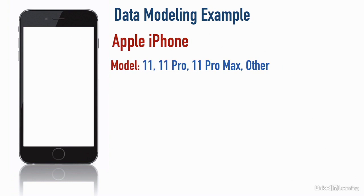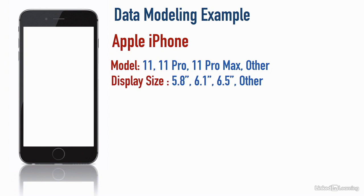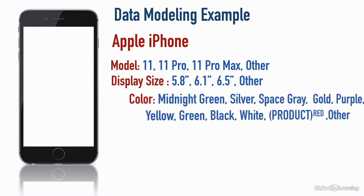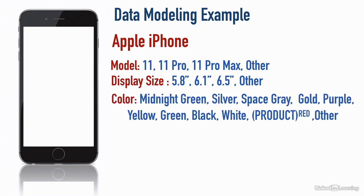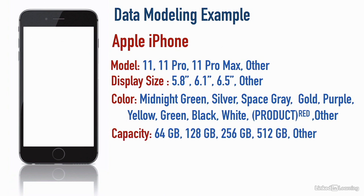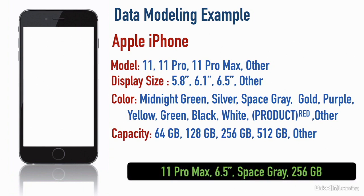That would be my model, or if it was something else, we could say other. For the 11 Pro Max, the diagonal display size is 6.5 inches. As I fill out the data model for my specific iPhone, I'm specifying all these characteristics: the model, the display size, the color — in my case, space gray — and the capacity, which is 256 gigabytes. So here's a populated data model describing my iPhone: an 11 Pro Max with a 6.5-inch display, space gray, with 256 gigabytes of storage.